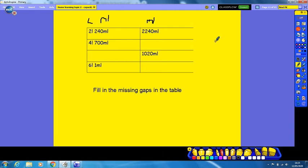So hopefully you filled in the gaps in the missing table, and I'm just going to run through the answers quickly. So 4 liters, 700 milliliters, well 4 liters would be 4,000 plus 700, so it gives us 4,700 milliliters. And then we have 1,020 milliliters, so I have 1,000, which means I have 1 whole liter, and then I've got 20 milliliters, so I've got no hundreds, so I've just got 20 milliliters.